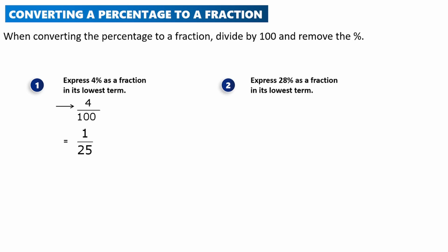Question two: express 28 percent as a fraction in its lowest term. We use the same procedure and write 28 over 100, then reduce it. 2 into 28 goes 14 times and 2 into 100 goes 50 times, giving 14 over 50. Reducing further: 2 into 14 goes 7 times and 2 into 50 goes 25 times, so the final answer is 7 over 25.